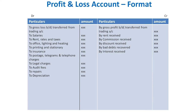Next is commission paid. Carriage inwards is a direct expense taken in the trading account, whereas carriage outwards is a selling expense entered in the profit and loss account. Then traveling expenses and interest on capital — capital is the investment made by the owner, and any interest paid to the owner on that investment is also an expense, taken on the debit side.